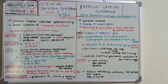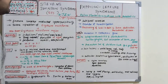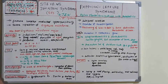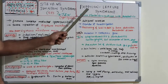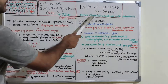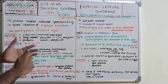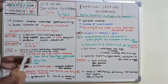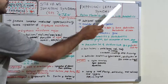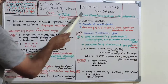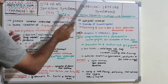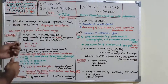Now let's move on to Papillon-Lefèvre syndrome, also known as palmoplantar keratoderma with periodontitis. As the name suggests, it involves keratinization on the palms and plantar region, and is associated with severe alveolar bone destruction, causing severe periodontitis.